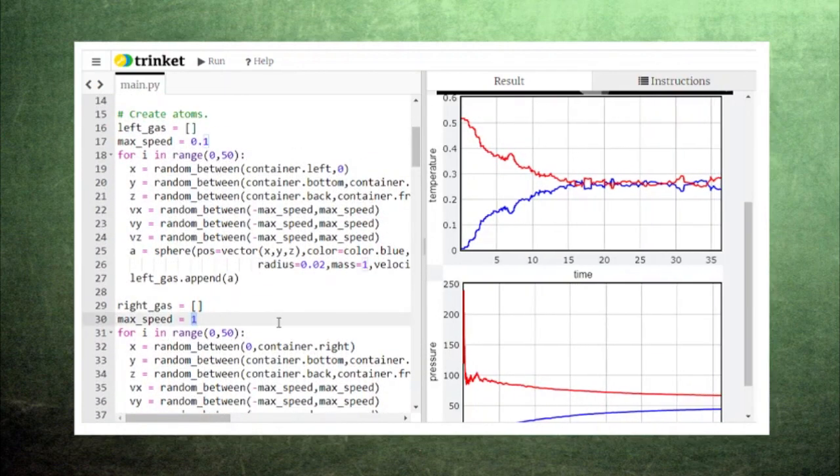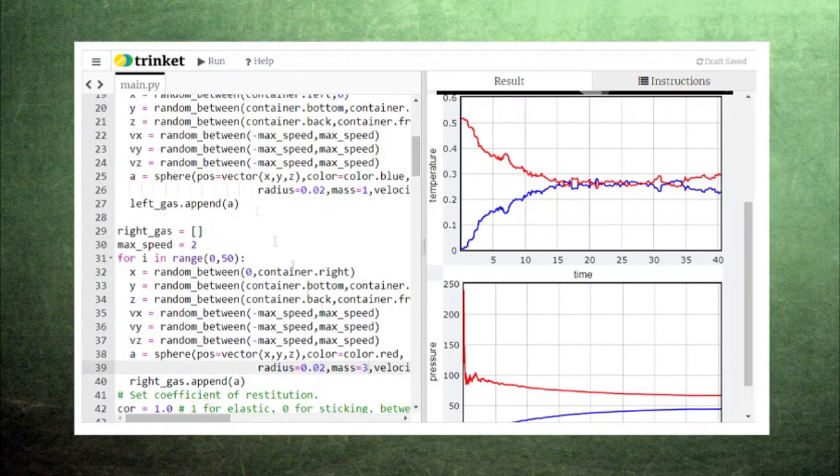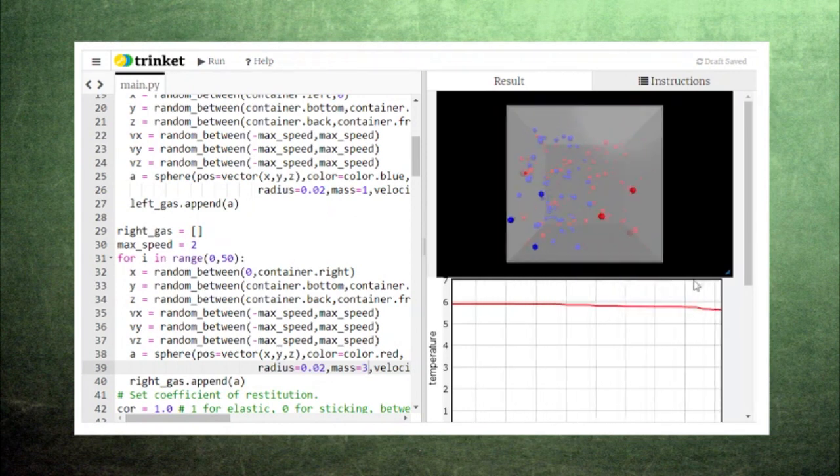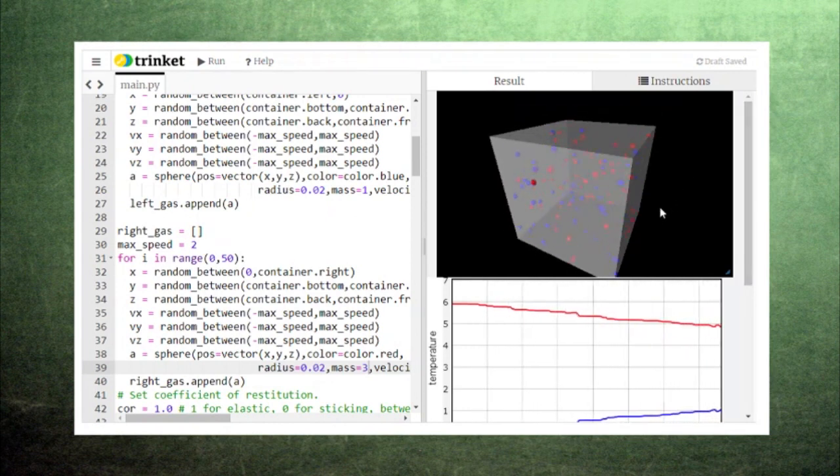The details of this behavior will change if you adjust the initial speed and mass of the particles at the beginning of the code, but the two gases will always reach thermal equilibrium.